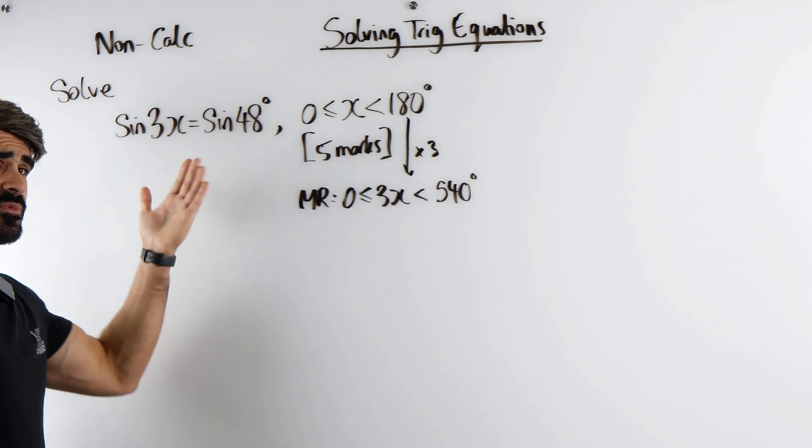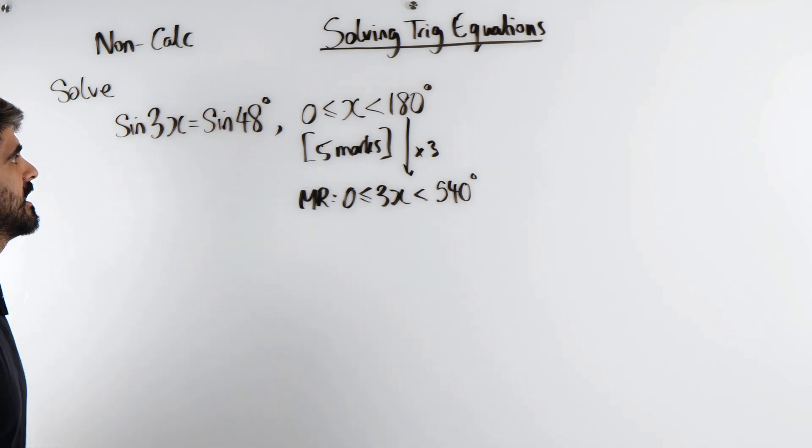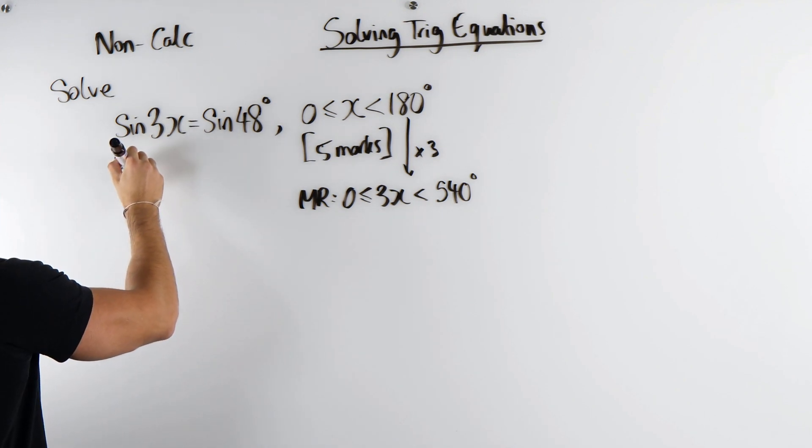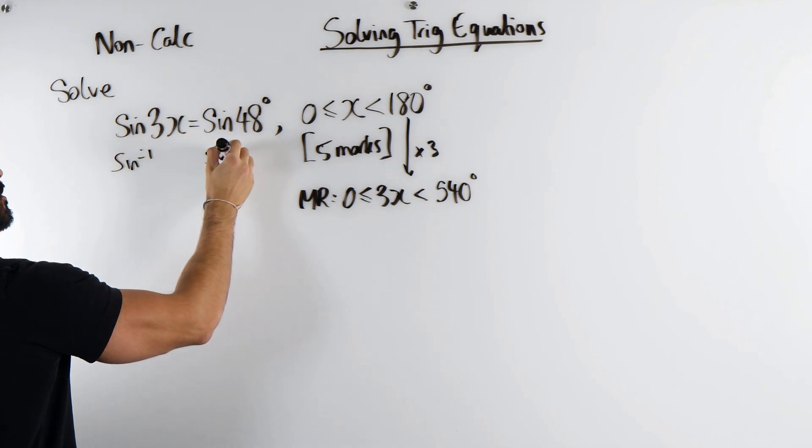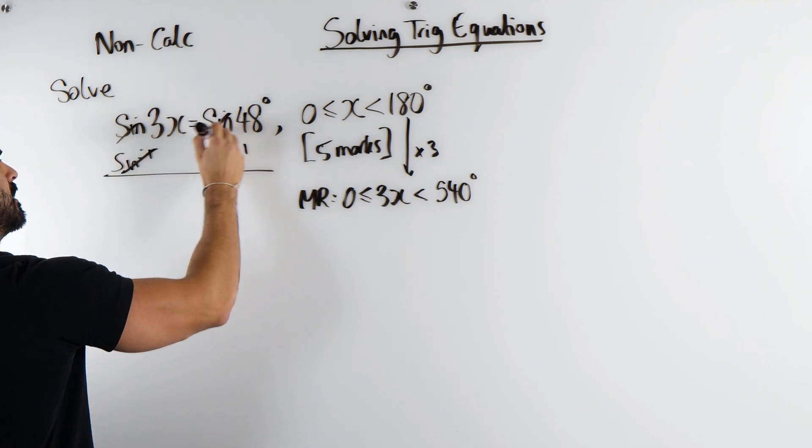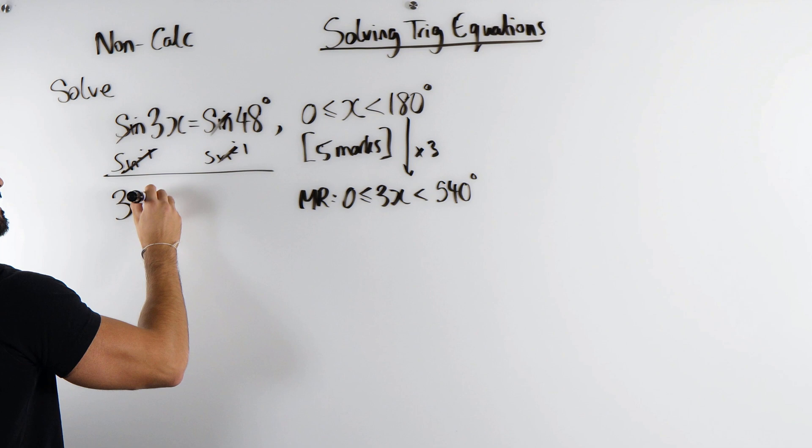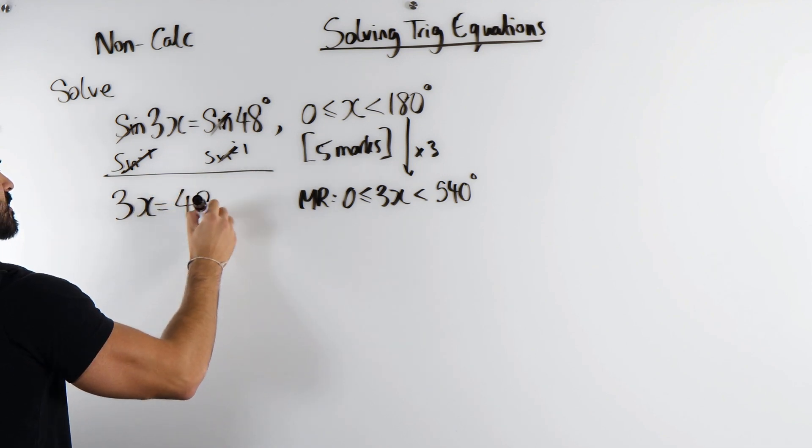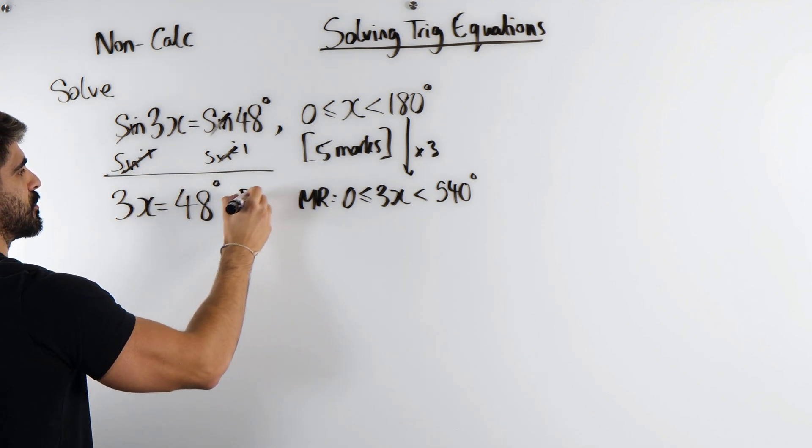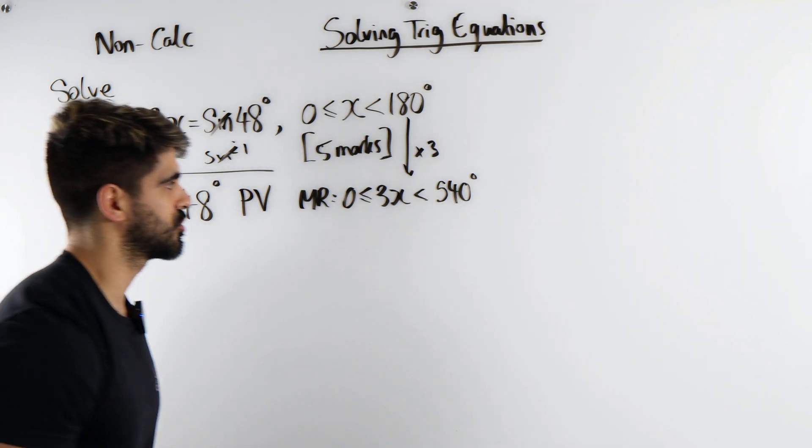Now, don't just cross off the sines. Indicate that we are doing the inverse of both sides. So 3x = 48 degrees. This is known as the primary value in solving trig.